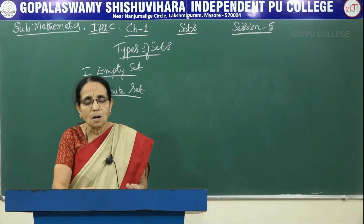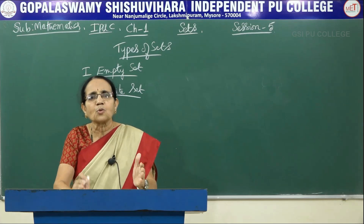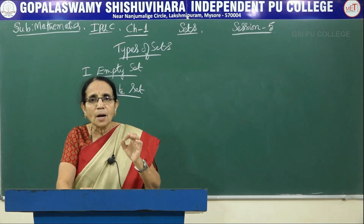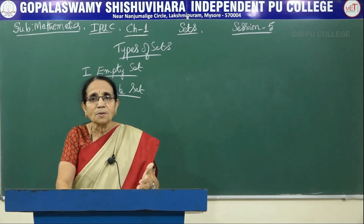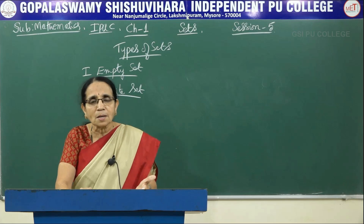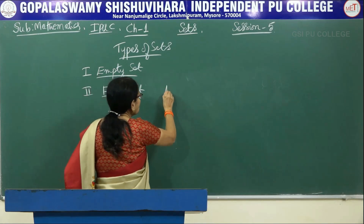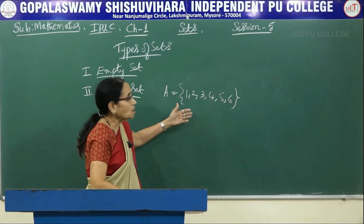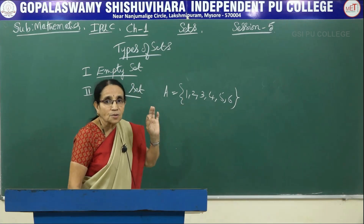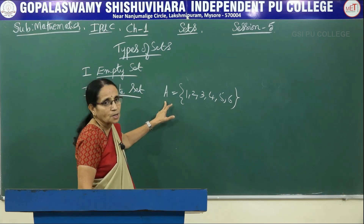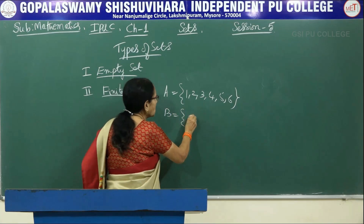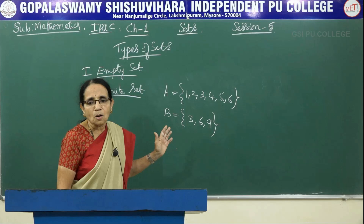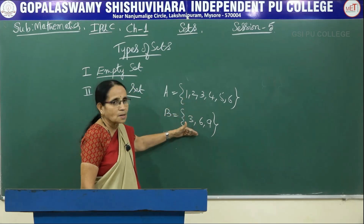Examples of finite sets: the alphabets of a language, the students of a class — whatever the number may be, we know the exact count — or the population of a country, determined by census. For instance, set A = {1, 2, 3, 4, 5, 6} has exactly 6 elements; set B = {3, 6, 9} has exactly 3 elements. These are called finite sets because we know exactly how many elements they contain.